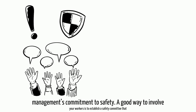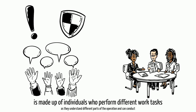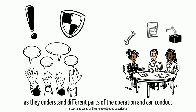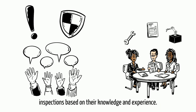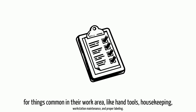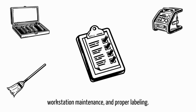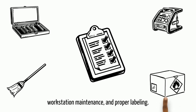A good way to involve your workers is to establish a safety committee made up of individuals who perform different work tasks, as they understand different parts of the operation and can conduct inspections based on their knowledge and experience. You could also collaboratively develop daily or weekly checklists for things common in their work area, like hand tools, housekeeping, workstation maintenance, and proper labeling.